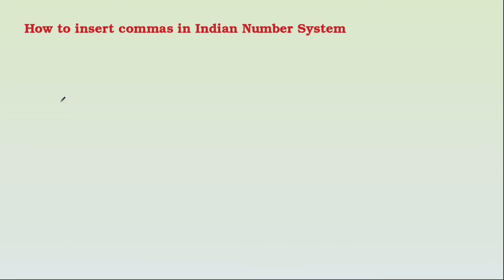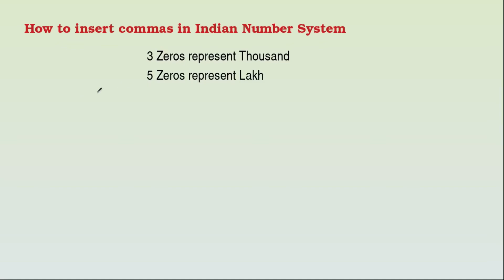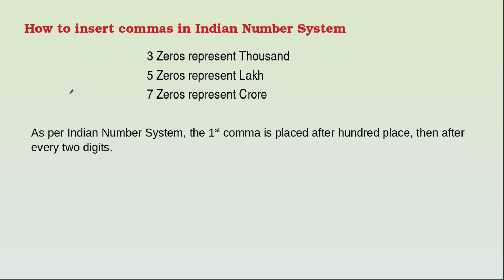Now we are going to see how to insert commas in the Indian number system. We know that thousand consists of three zeros, lakh has five zeros, and crore has seven zeros. As per the Indian number system, the place values are: ones, tens, hundred, thousand, ten thousand, lakh, ten lakh, crore, ten crores.